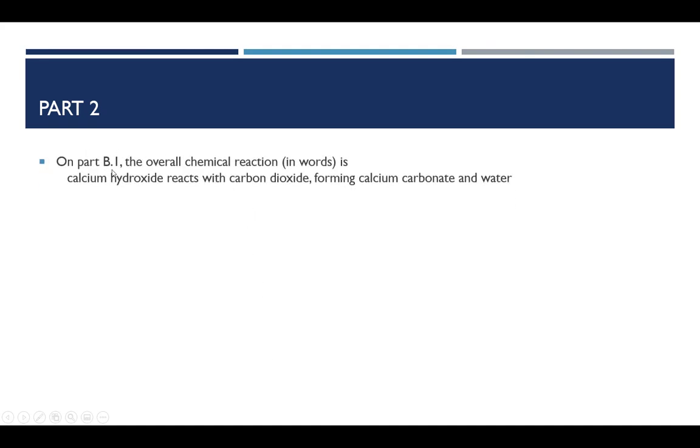On part B1, let me just give you the chemical reaction in words. It's calcium hydroxide reacts with carbon dioxide forming calcium carbonate and water. Water is technically also a reactant over here, but when we balance it, some of the water would cancel out. That's why I'm just simply giving you this net equation here. So you'll want to write that equation and you'll need to balance it.